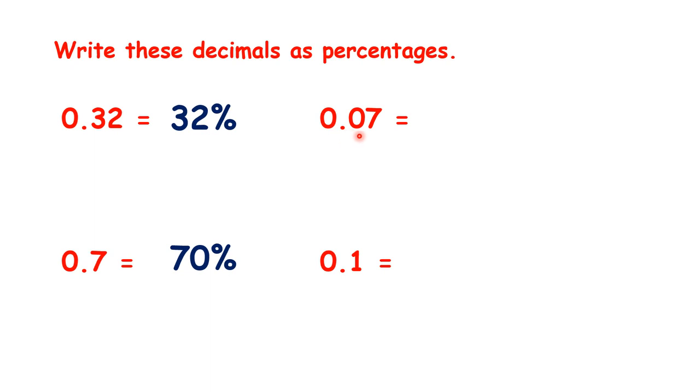0.07 is 7%, and 0.1 is 10%, because 1 tenth is equivalent to 10 hundredths.